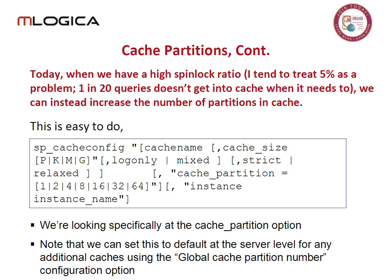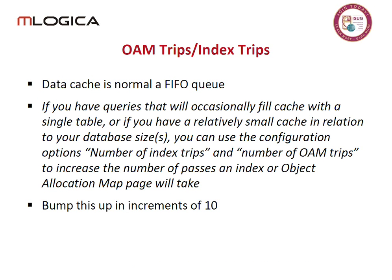Sybase has never been hugely consistent about how they set things up. Note that you can set this up at a global level with the global cache partition number. If you want to do this for all your caches, that's probably not a bad approach. As a DBA, I'm a bit of a control freak so I check all of these manually, but there's no reason not to set this globally.